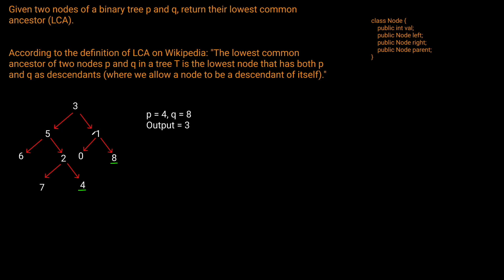We see that the node where both of these converge is going to be three. We go up here, and then we hit the root, and this one goes up to the five, and then the three. So three is the first node when traversing up through the parents that we meet from both sides. And obviously, eight can't go any higher because there is no parent of the root. So this would have to be our node here.